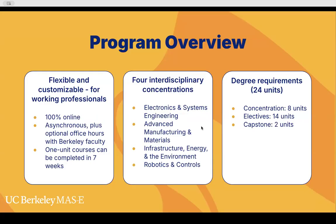Here's a program overview. It's flexible and customizable, perfect for working professionals. Again, 100% online, asynchronous, with optional office hours among Berkeley faculty and lecturers. One-unit courses can be completed in seven weeks, but they can last the full term — if you want to finish early, you can. There are four interdisciplinary concentrations to choose from. The degree requirements are: eight units from concentration requirements, 14 units as electives, and two capstone units, which are also required.